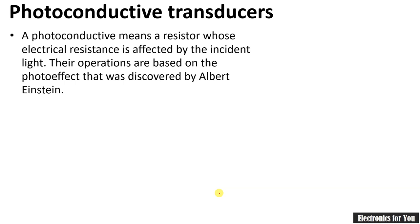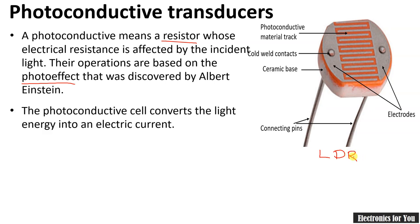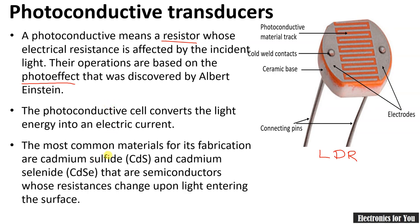Next is the photoconductive transducer. The photoconductive transducer is essentially a resistor — when light is incident on it, its resistance changes. The operation is based on the photo effect discovered by Albert Einstein. An example is the LDR, or light-dependent resistance. Some photosensitive material is required; the materials used are cadmium sulphide or cadmium selenide. The material is spread in a zigzag pattern on a ceramic base.